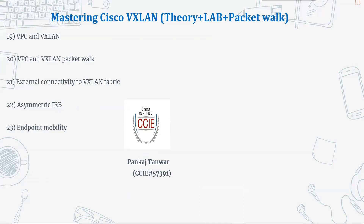Then we'll discuss how VPC is going to work in the case of VXLAN, do a packet walk, and cover other important aspects of VXLAN and VPC. We'll also discuss how to connect the outside network with our VXLAN fabric. There will be a short discussion about asymmetric IRB — though it is not supported by Cisco, I have created a short video on that. Finally, we'll discuss endpoint mobility: if your endpoint moves from one location to another, what exactly happens within your VXLAN network.